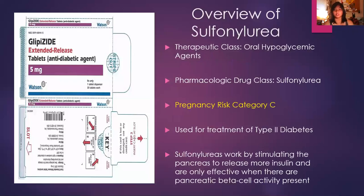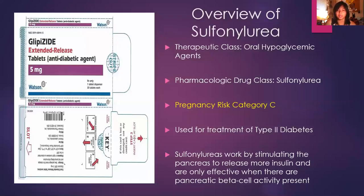Here's a quick overview of the drug class I chose. The therapeutic class it belongs to is oral hypoglycemic agents, and the pregnancy risk category falls into category C. It's used for the treatment of type 2 diabetes and works by stimulating the pancreas to release more insulin, but is only effective when pancreatic beta cell activity is present, which means it only works for type 2 diabetes and not type 1.